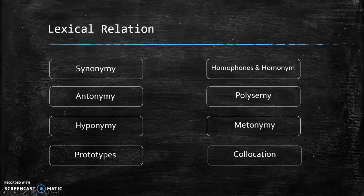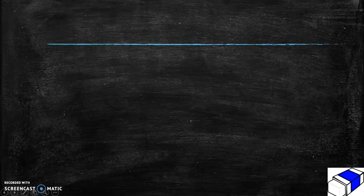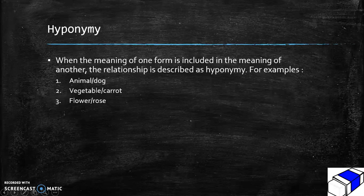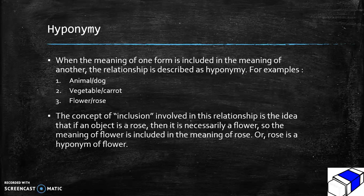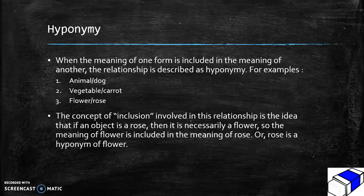The next subject is hyponymy. When the meaning of one form is included in the meaning of another, the relationship is described as hyponymy. For example: animal and dog, vegetable and carrot, flower and rose. If an object is a rose, then it is necessarily a flower, so rose is a hyponym of flower.